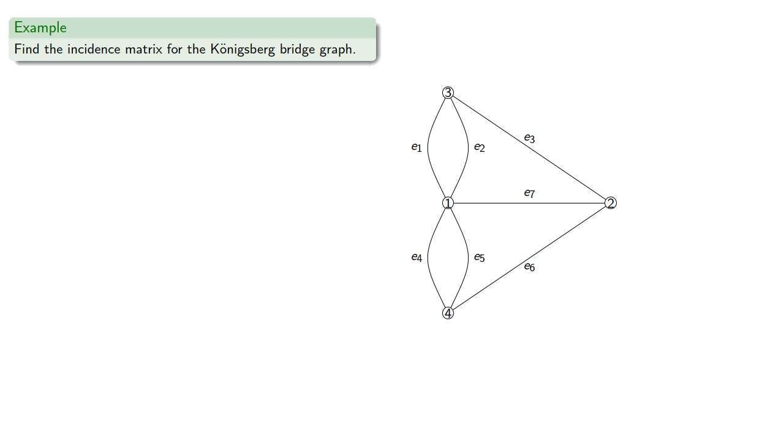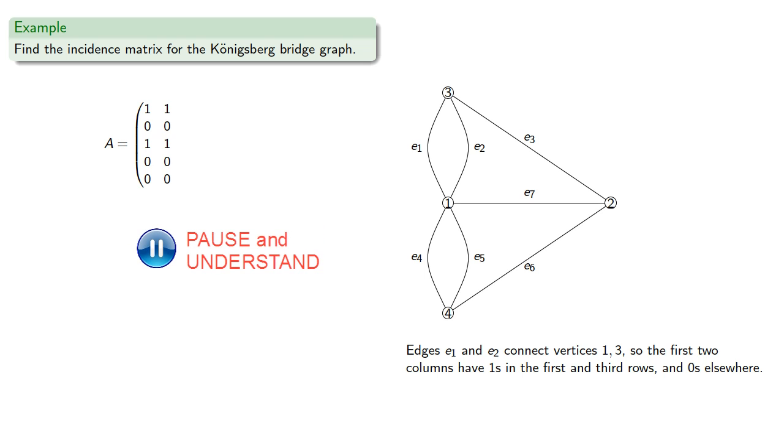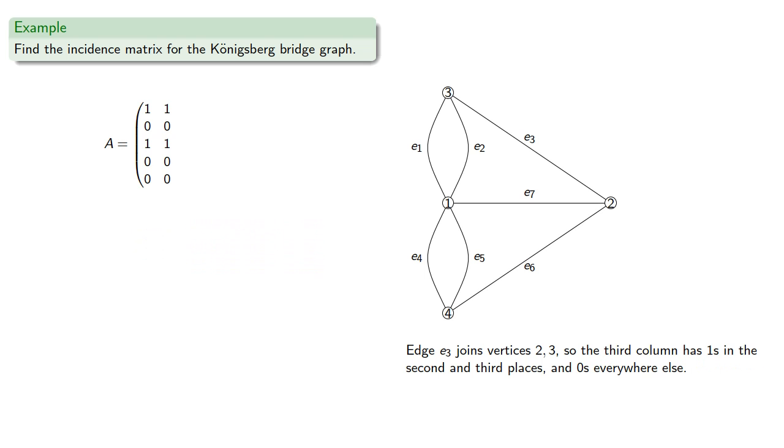For example, let's construct the incidence matrix for the Königsberg bridge graph. So edges E1 and E2 connect vertices 1 and 3, so the first two columns have 1s in the first and third rows and 0s elsewhere. Edge E3 joins vertices 2 and 3, so the third column has 1s in the second and third places and 0s everywhere else.